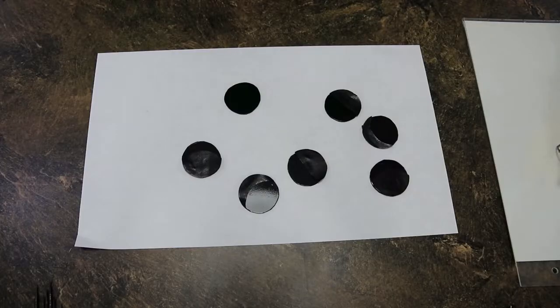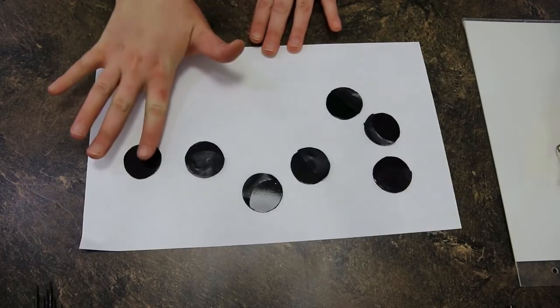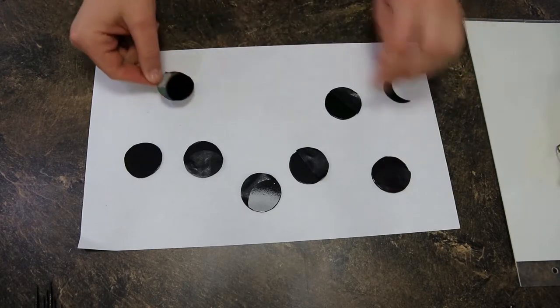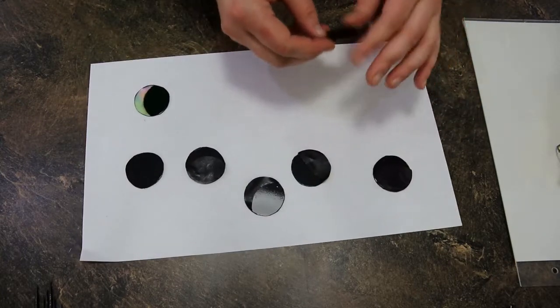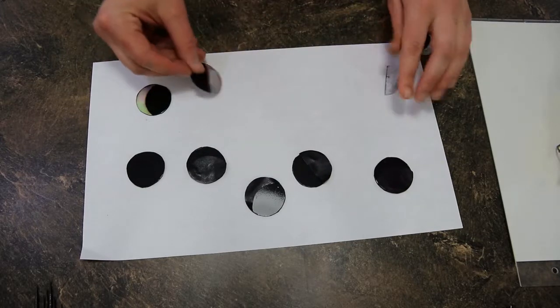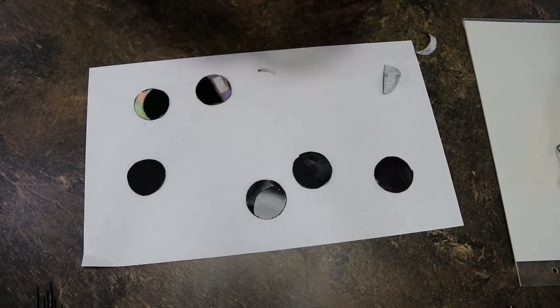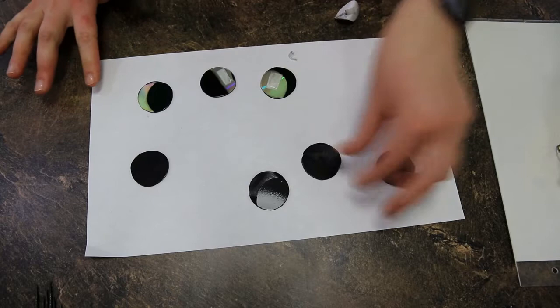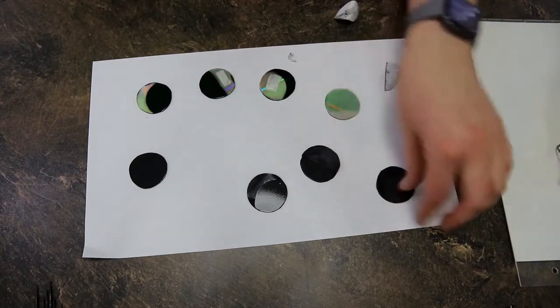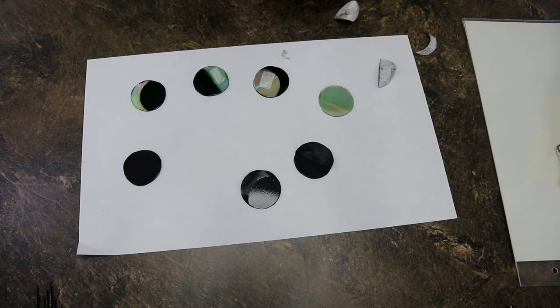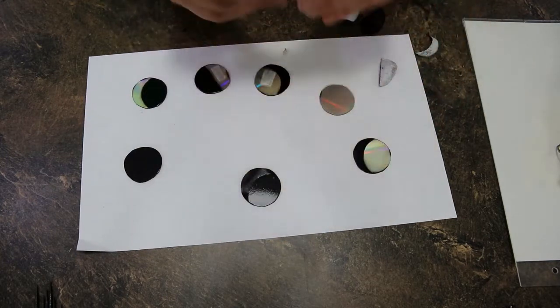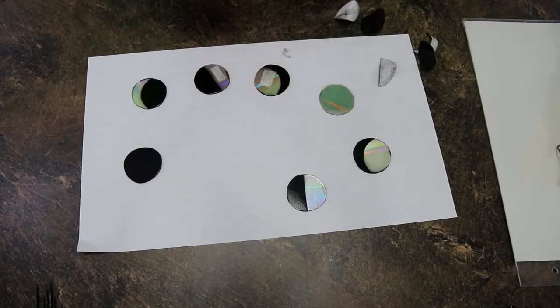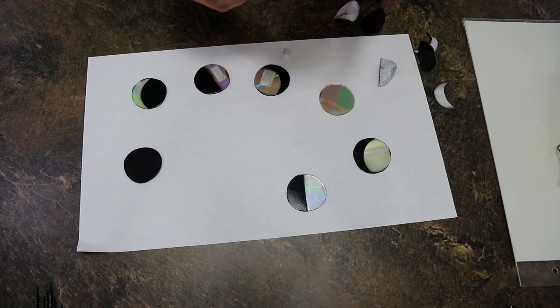Now that our spray paint has dried, we're ready to begin assembling. You'll see that we have our new moon right here. We have a waxing crescent, our first quarter, our waxing gibbous, our full moon, the waning gibbous, the third quarter, and our waning crescent.